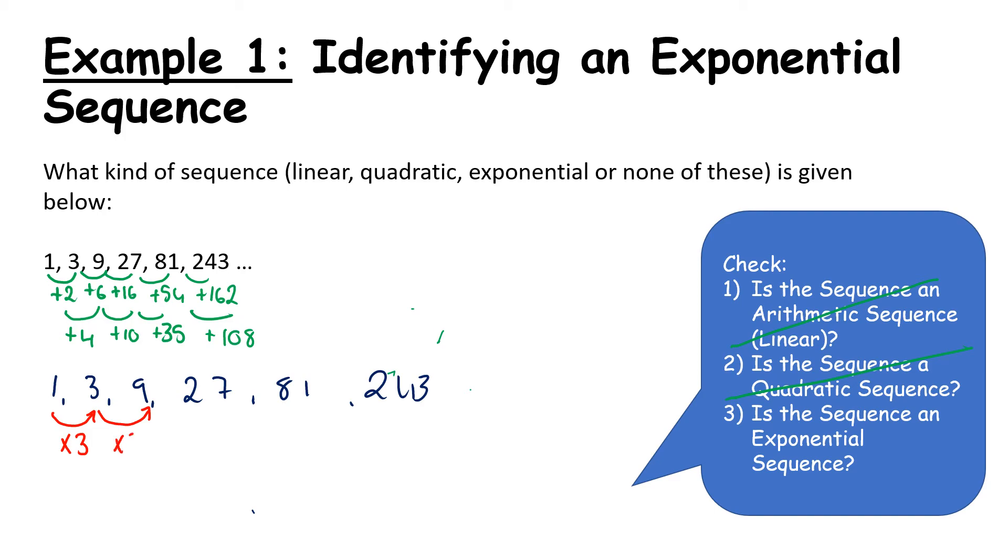What about 3 to 9? Yeah, again, multiply by 3. And suddenly I see this common ratio emerging. So this is, based on the fact that it is a multiplication, we would say that it is an exponential.